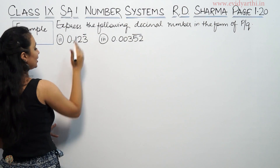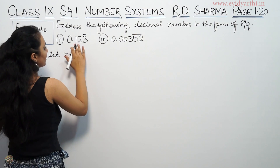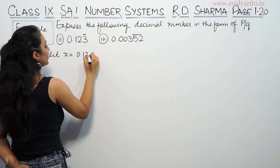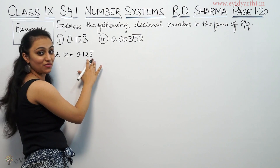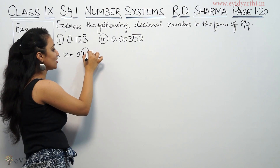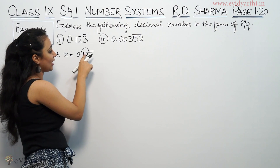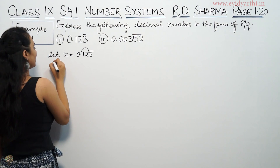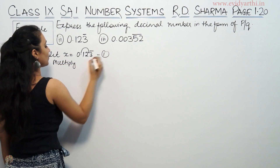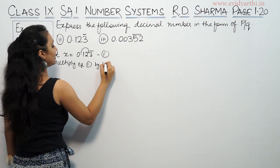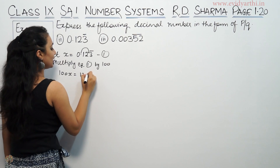The number is 0.123 repeating. Let's say x is equal to 0.123 bar. Now we will change the decimal — there are 1, 2 decimal places before the repeat, so we multiply by 100. Multiplying equation 1 by 100, this will be 100x equals 12.3 bar.